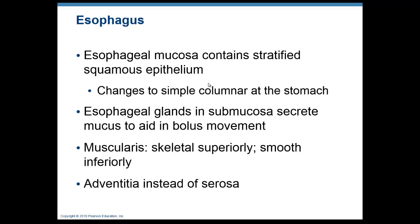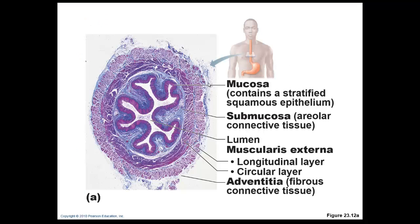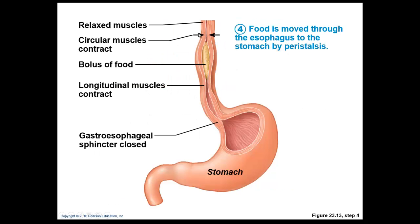Once food enters the esophagus, remember its lining is stratified squamous epithelium to prevent damage as we swallow. It is smooth muscle near the bottom and skeletal muscle near the top. Waves of peristalsis rhythmically contract and relax to move food toward the stomach. Sphincters at the top and bottom control movement to prevent contents from going from the stomach back to the esophagus. Weakness of the lower esophageal sphincter leads to acid reflux.